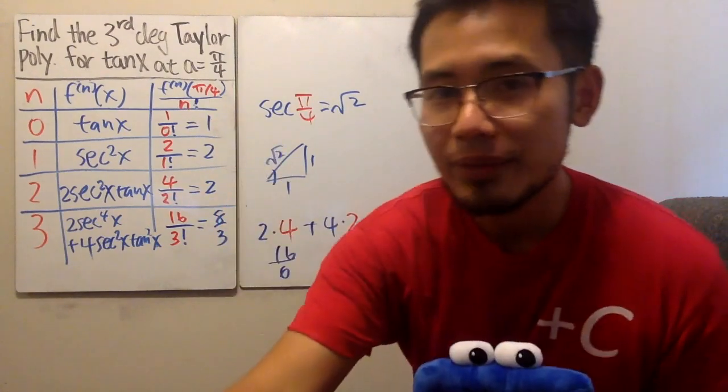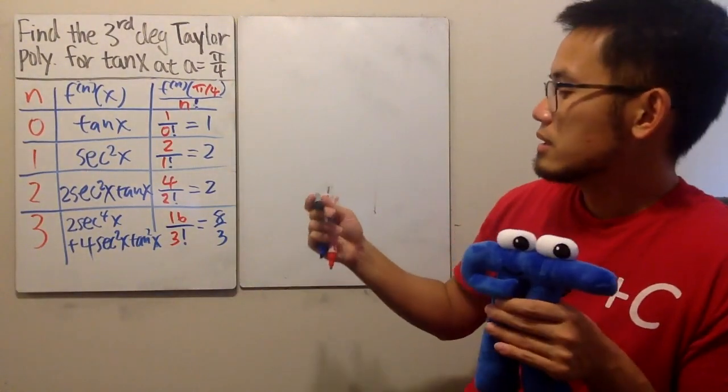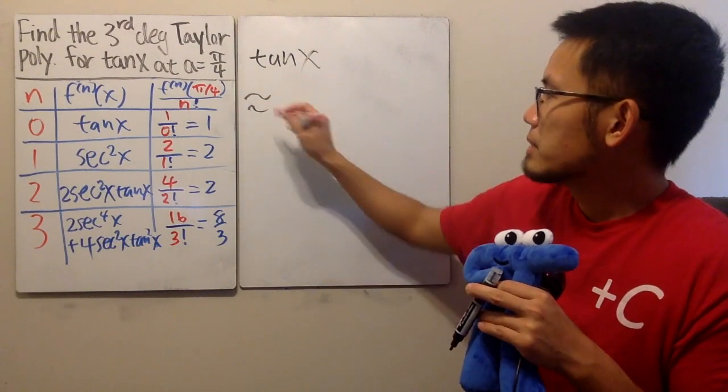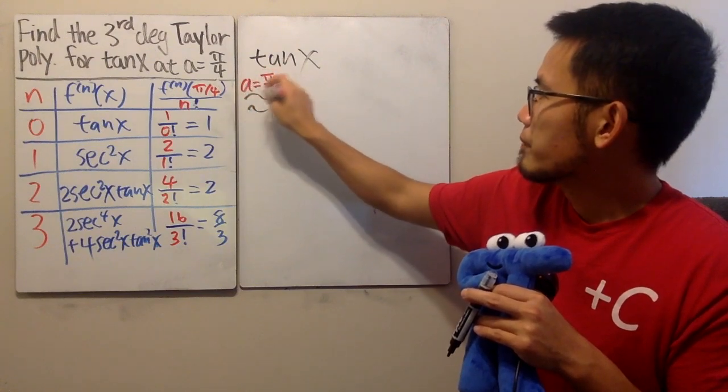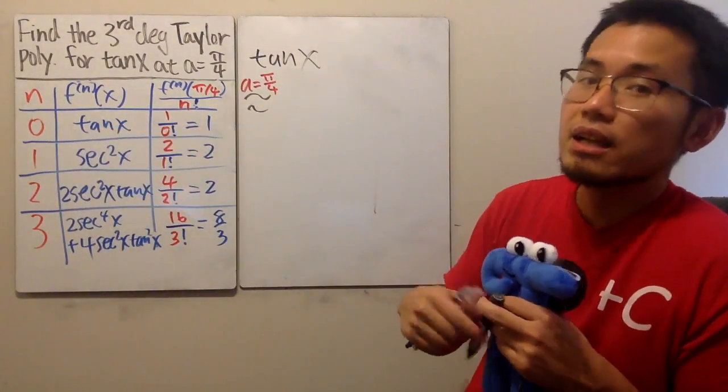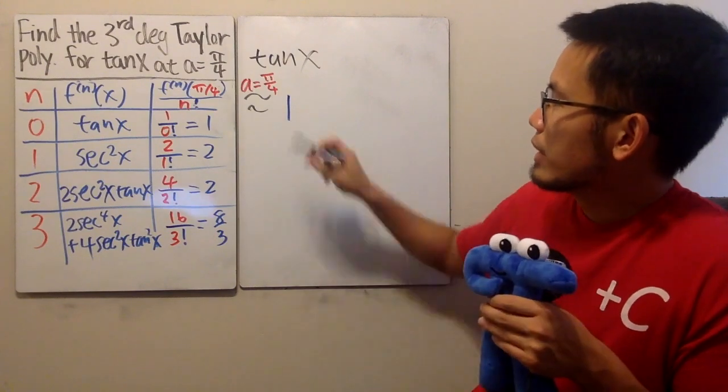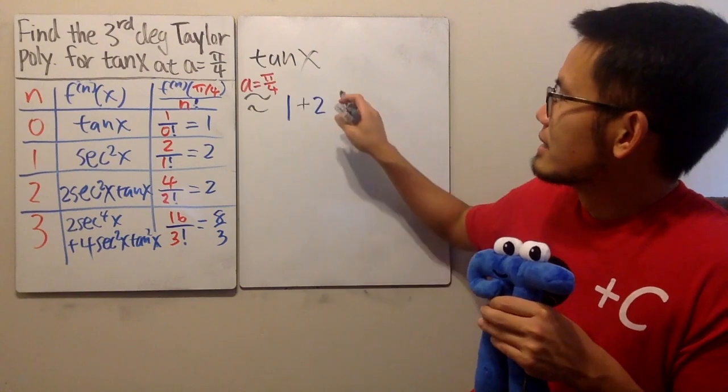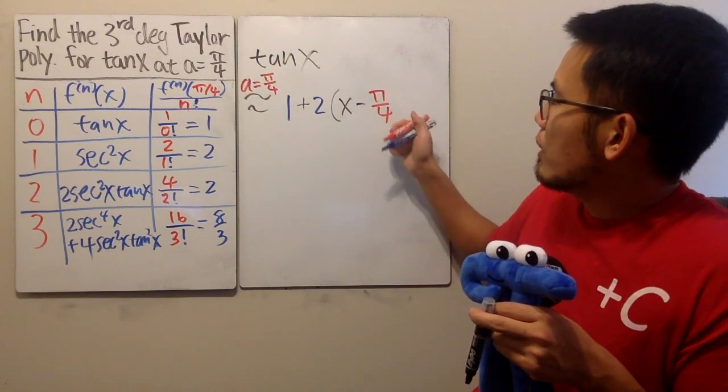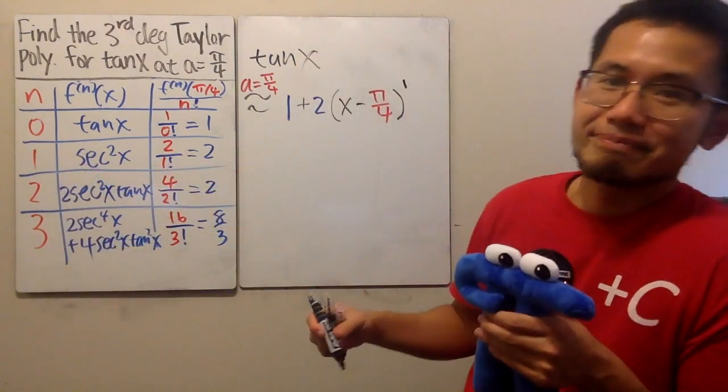So, this will give us the coefficients, which is very nice. Now, ladies and gentlemen, let me write down tangent of x. This is approximately equal to, and again, this is approximate because it's just a Taylor polynomial, and the a is at pi over 4. So this right here, when n equals 0, that's our constant term, so we have 1. And then next, we have the 2, so we'll just write down plus 2 times x minus the a value, which is pi over 4, and we have to raise this to the first power, because this is when n equals 1.